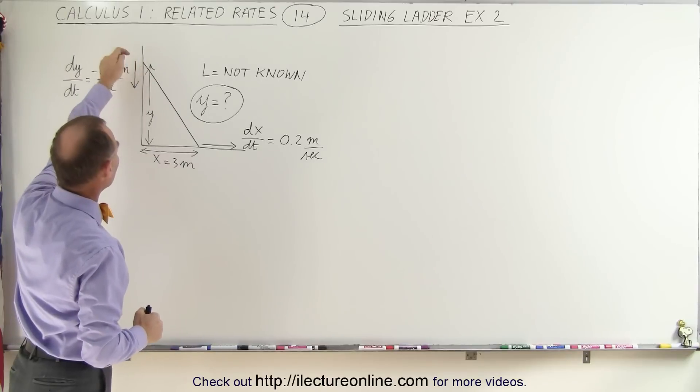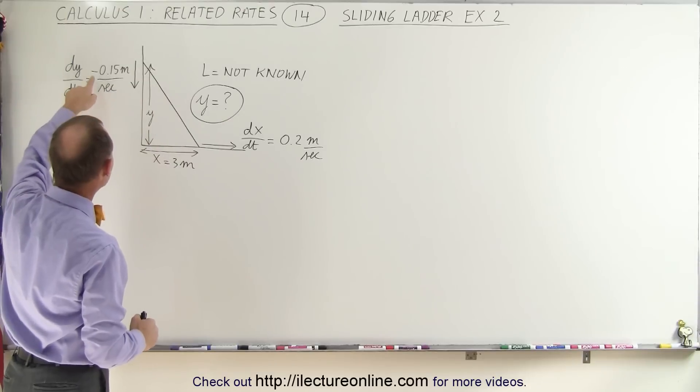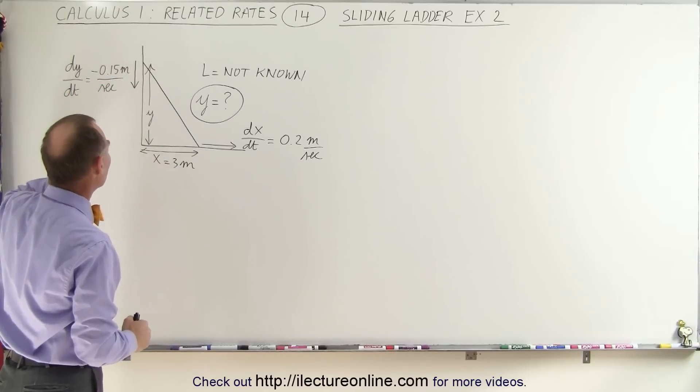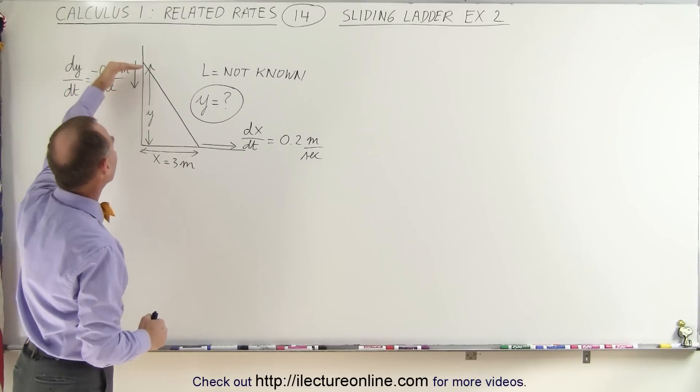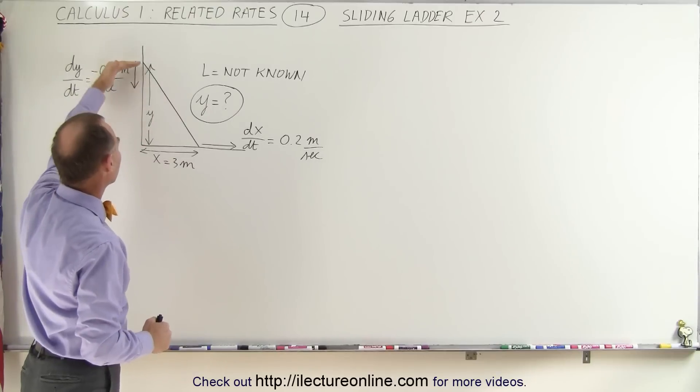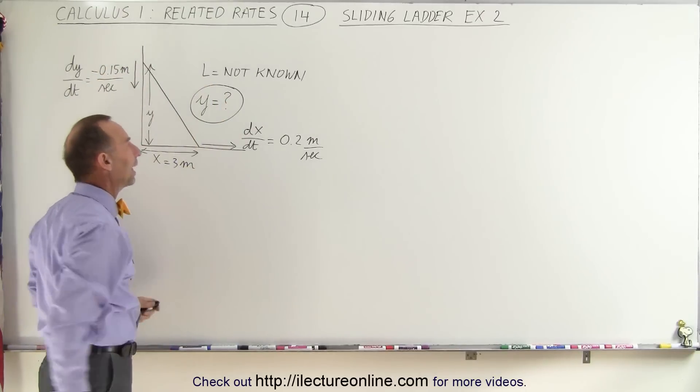We're also told that the top portion of the ladder is moving downward at negative 0.15 meters per second. We do not know where that portion of the ladder is relative to the ground, and we do not know the length of the ladder.